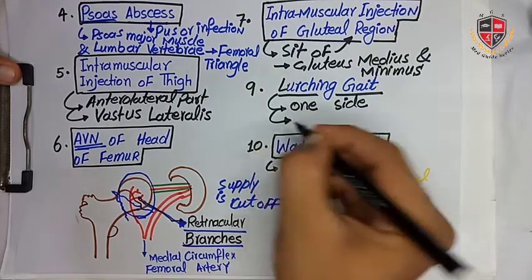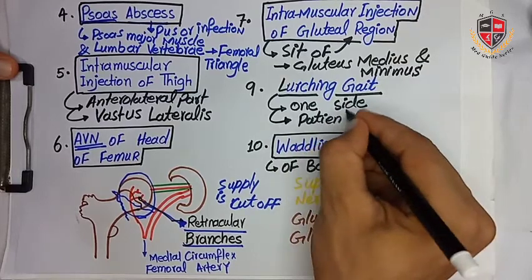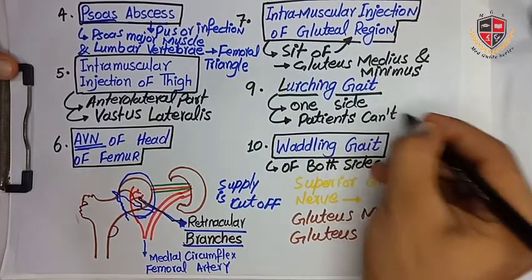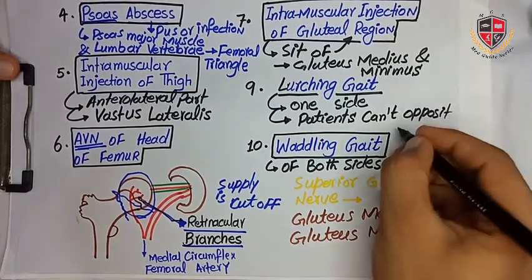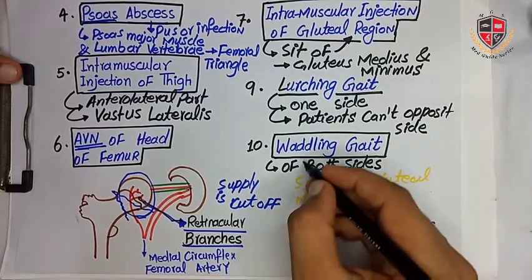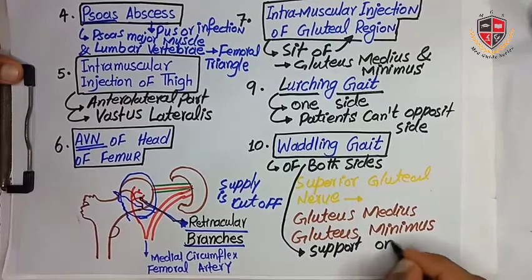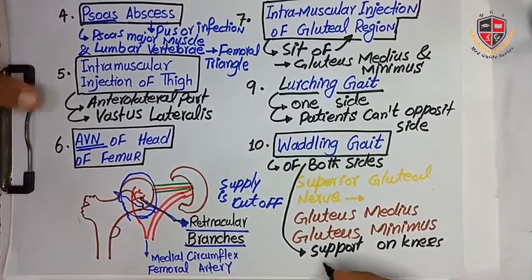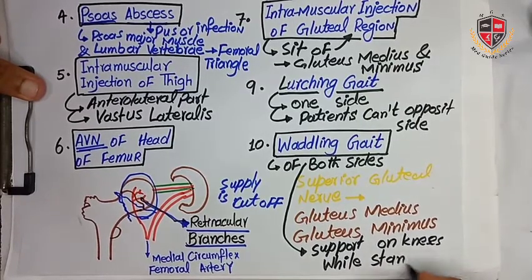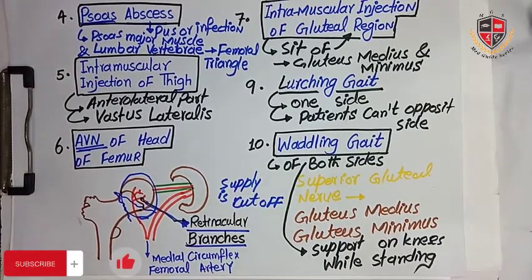In Trendelenburg gait, the patient cannot support the opposite side of the pelvis because the muscles are paralyzed on one side, and the patient limps while walking. In Waddling gait, the superior gluteal nerve of both sides is damaged, causing paralysis of gluteus medius and gluteus minimus on both sides, and the patient must support themselves with their hands on their knees while standing.